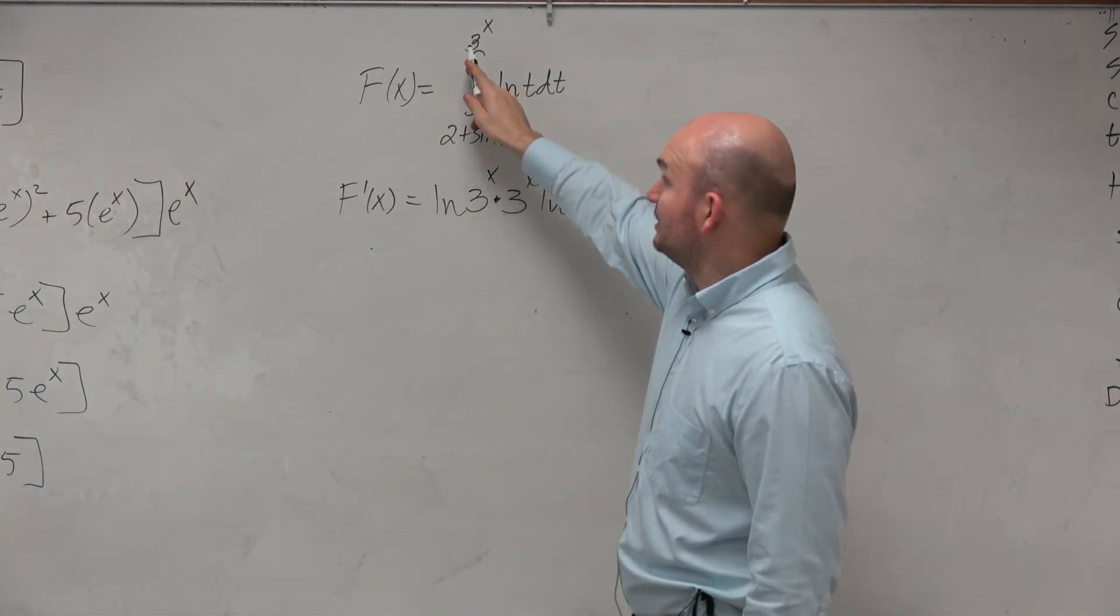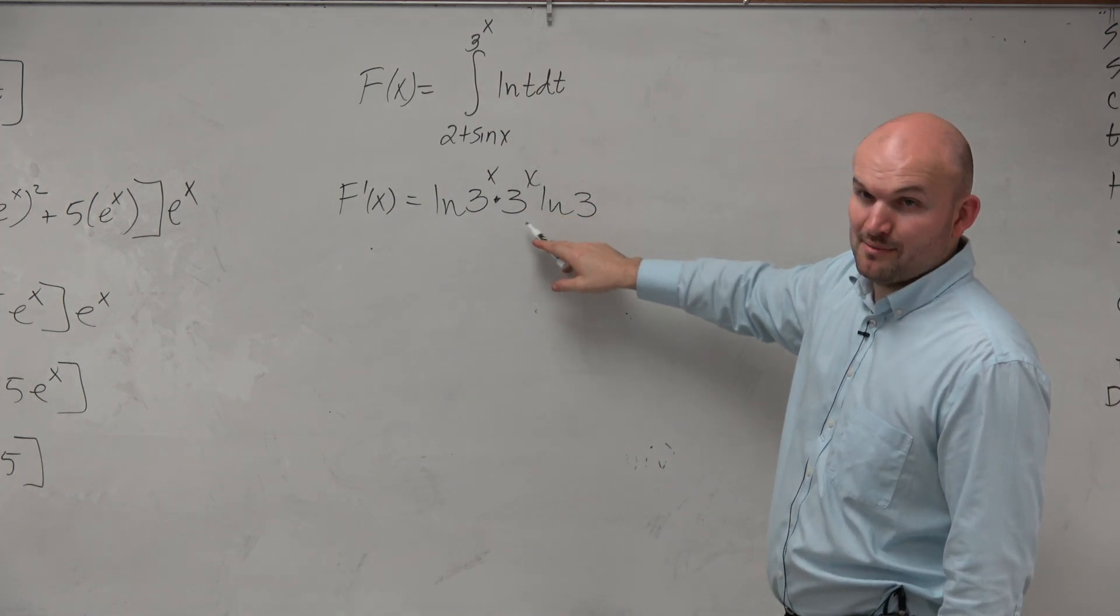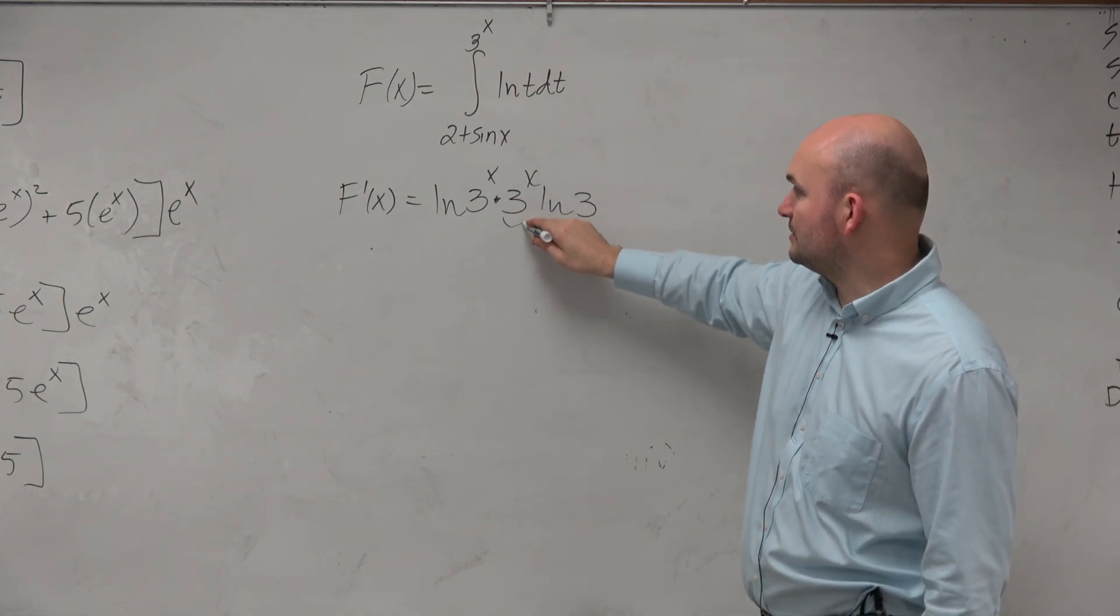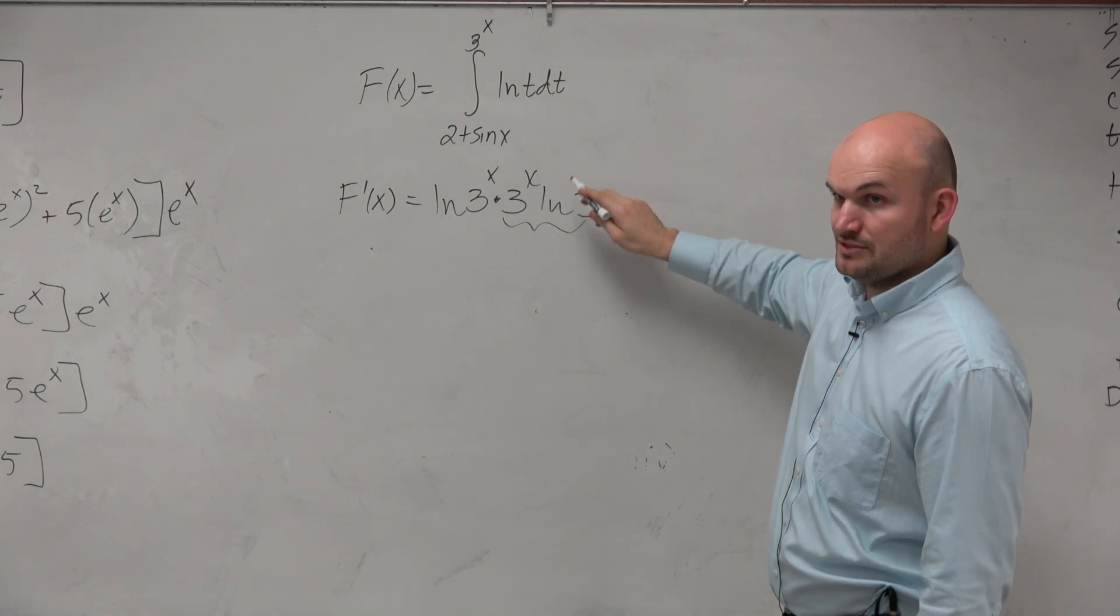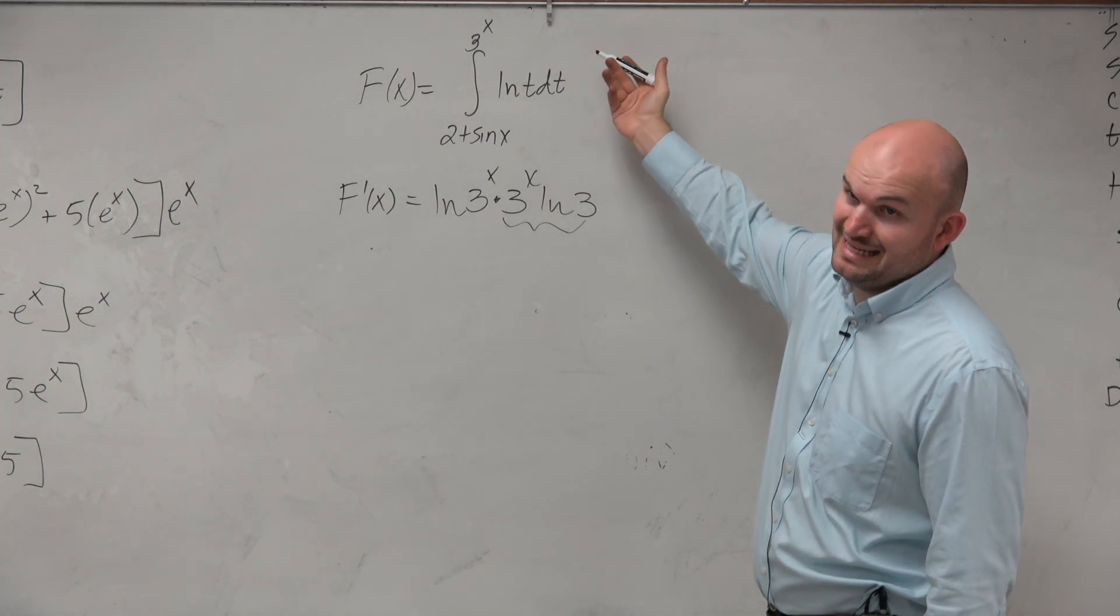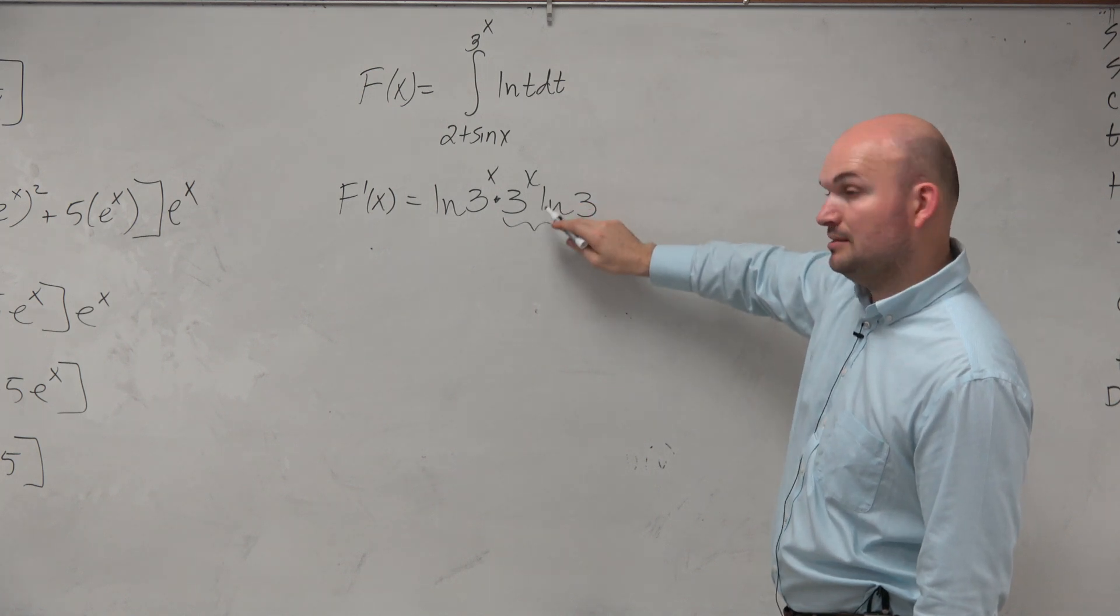So remember, you're just plugging in your 3x into your function, and then multiply it by the derivative. People kind of forget this one because it doesn't come up all the time. So you've got to remember when you have exponentials where e is not the base, where you have a number as a base. Remember, that's the derivative.